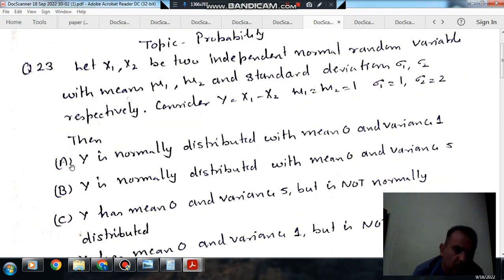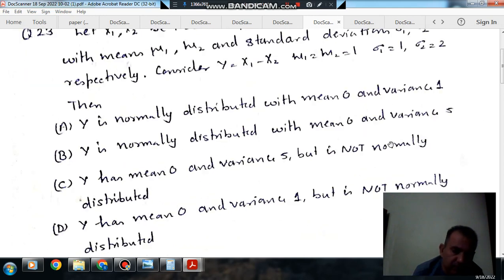Then option A: Y is normally distributed with mean 0 and variance 1. Option B: Y is normally distributed with mean 0 and variance 5.